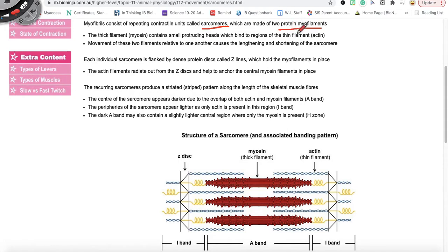So these are proteins and you're going to see that they have different names. We have a thick filament known as myosin and then we have a thin filament known as actin. So these are the two protein myofilaments that you're responsible for recognizing, drawing, and understanding how they work.